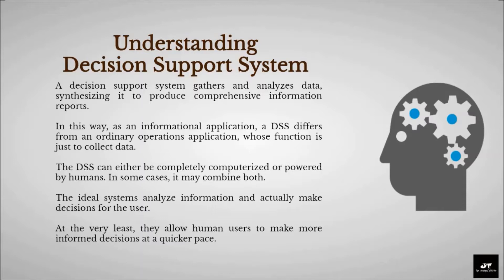A Decision Support System gathers and analyzes data, synthesizing it to produce comprehensive information reports. As an informational application, a DSS differs from an ordinary operations application, whose function is just to collect data. The DSS can either be completely computerized or powered by humans, or in some cases a combination of both. The ideal systems analyze information and actually make decisions for the user. At the very least, they allow human users to make more informed decisions at a quicker pace.